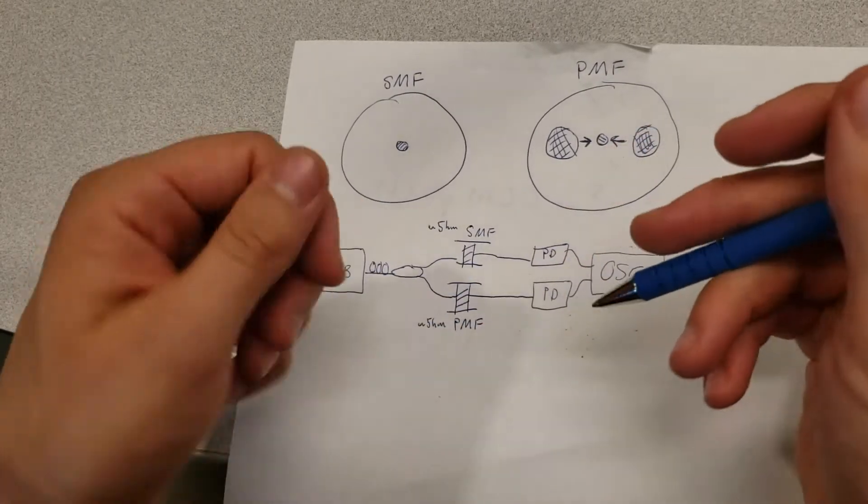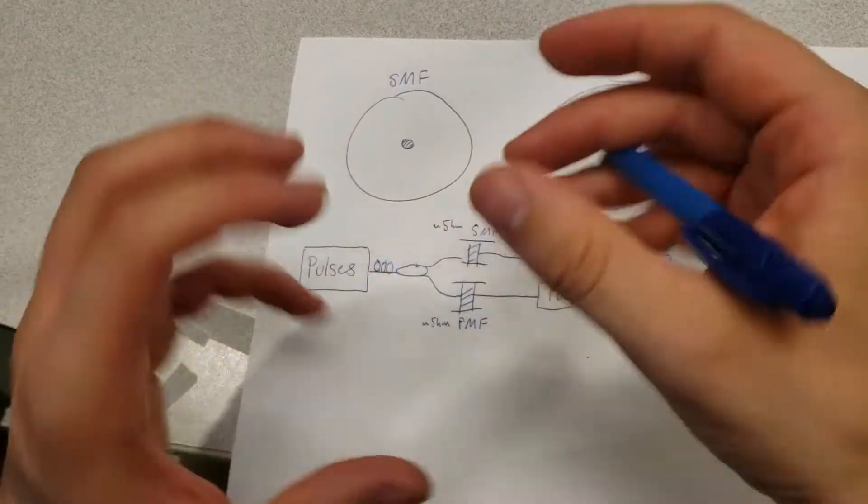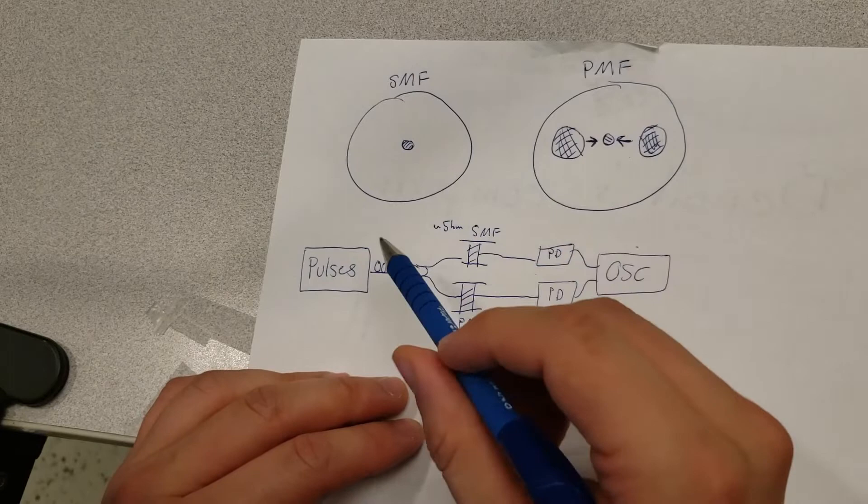This goes into a polarization controller, these paddles that you can turn in order to apply strain to the fiber and thereby change the state of polarization inside of the single mode fiber here.